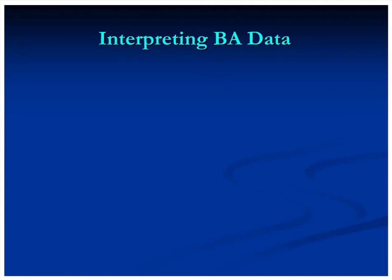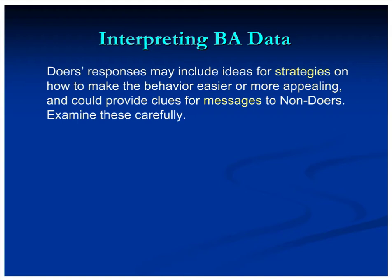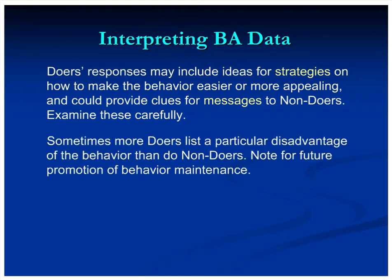There are a number of ways to use barrier analysis data when interpreting results. Doers' responses may include ideas for strategies on how to make the behavior easier or more appealing to your target group, and can provide clues for messages to non-doers. Also, sometimes more doers list a particular disadvantage of a behavior than non-doers — that's useful for future promotion of behavior maintenance, helping you know what difficulties doers now face so you can help them deal with those problems. Lastly, looking at differences between doers and non-doers as to who approves or disapproves may provide important information on who to target for your intervention.